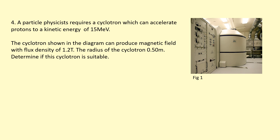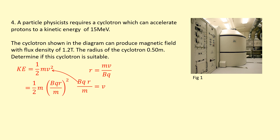Final question: particle physics requires a cyclotron which can accelerate protons to a kinetic energy of 15 mega electron volts. The cyclotron has a magnetic flux density of 1.2 teslas and a radius of 0.50 meters — determine if this cyclotron is suitable. I'll use KE = ½mv² and the key equation r = mv/bq. Rearranging to make v the subject — v = bqr/m — and substituting into ½mv², expanding the bracket gives KE = ½ × b²q²r² / m.